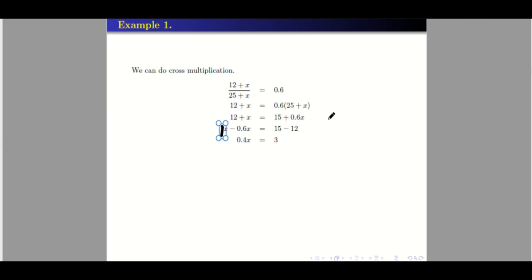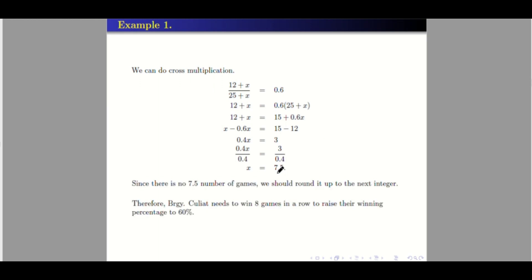So we have 0.4X equals 3. Dividing both sides by 0.4, we get 7.5. But take note, we have labeled X as the number of games — there is no such thing as 7.5 games. So we should round it up to the next integer. Therefore, Barangay Culiat needs to win 8 games in a row to raise their winning percentage to 60%.